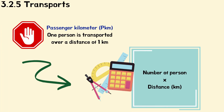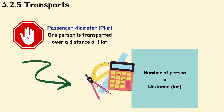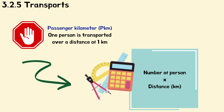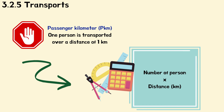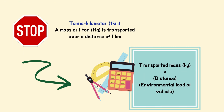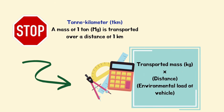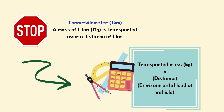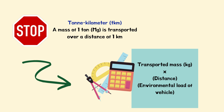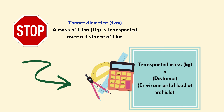For the last part, we will discuss transport. Usually, two key figures are employed for quantification in life cycle inventory. First is passenger-kilometer, which means one person is transported over a distance of one kilometer; the number of persons is multiplied by the distance in kilometers. Second is tonne-kilometer, which means a mass of one tonne is transported over a distance of one kilometer. For the determination of tonne-kilometers, the transported mass in tonnes is multiplied by the distance covered in kilometers, and the environmental load of the vehicle — for example its fuel consumption — is related to the tonne-kilometers.